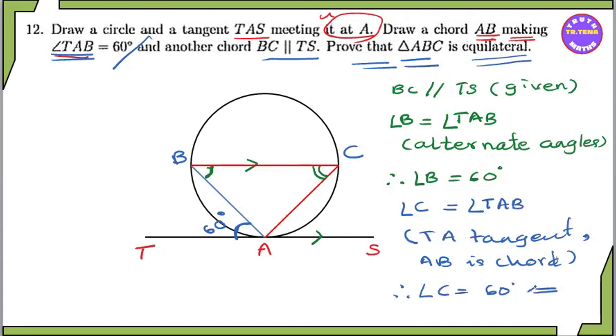Yeah, we know that this angle C equals 60 degrees. That's it. Down C. Down B. Down E. Triangle.